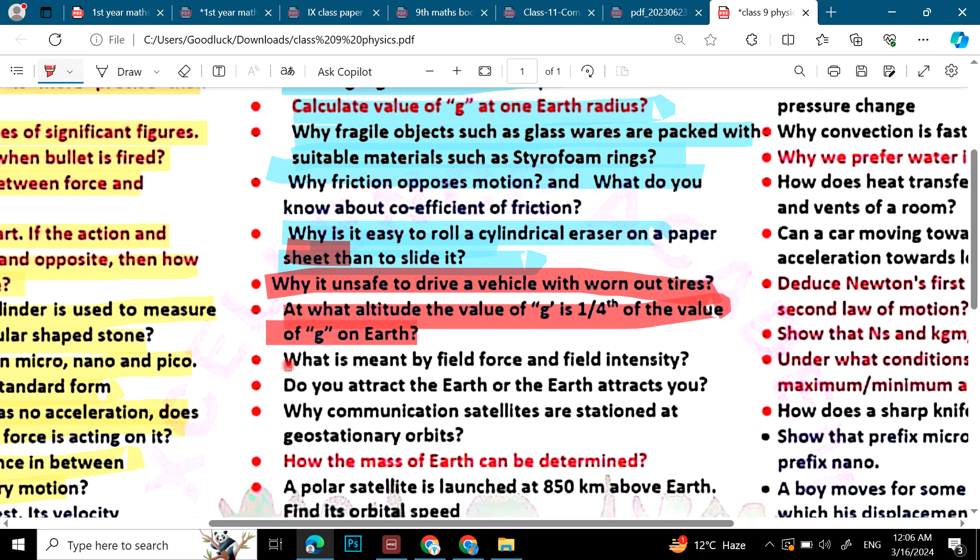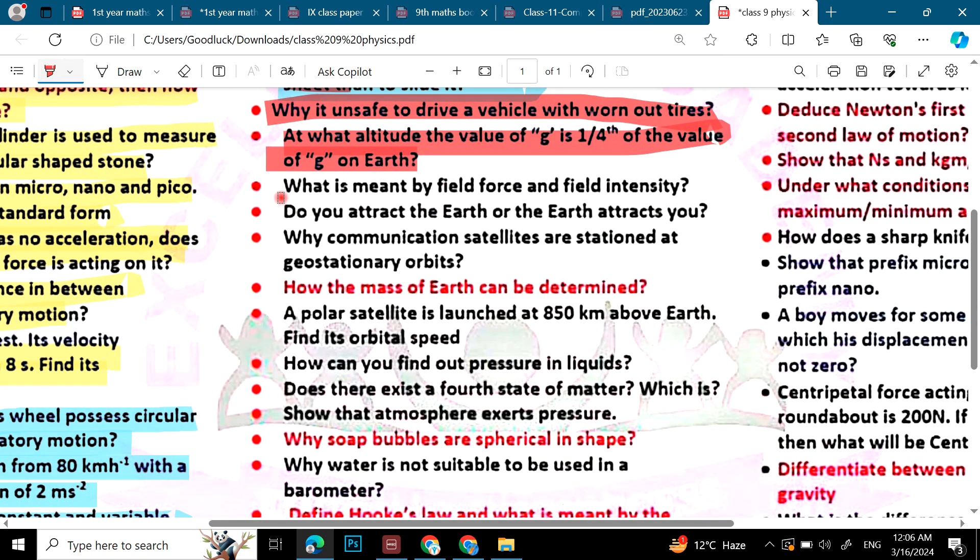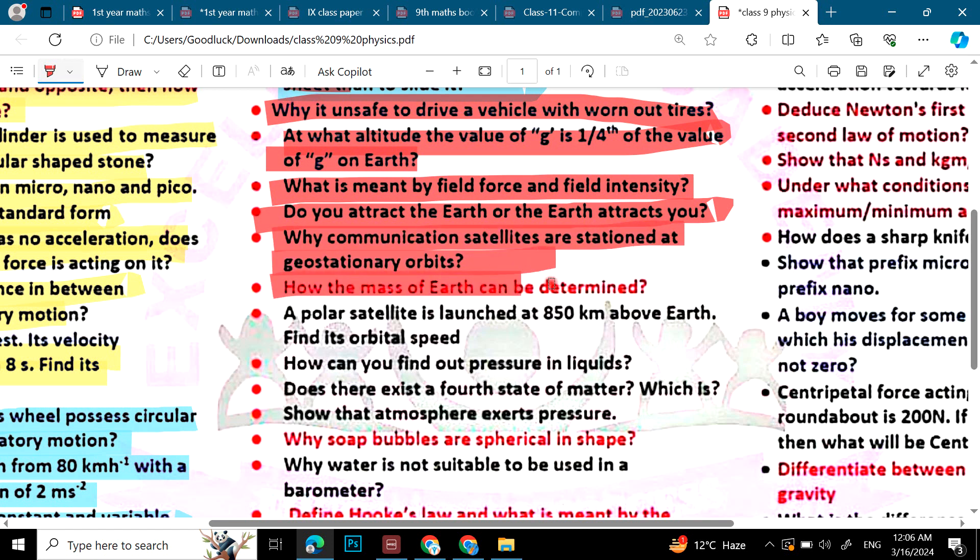At what altitude the value of g is one fourth. What is meant by field force and field intensity. Do you attract the earth or the earth attracts you. Why communication satellites are stationed at geostationary orbit. How the mass of earth can be determined. How a polar satellite is launched at 850 km above earth - find its orbital speed.